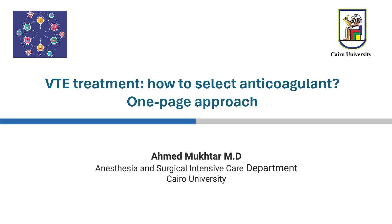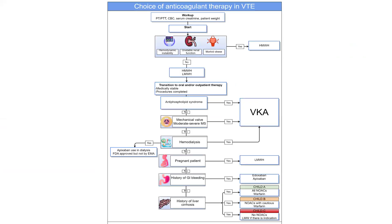In one page, we will discuss how to select anticoagulants in patients with venous thromboembolism. Looking at this page, we start first by examining some characteristics of the patient. We need to have some idea about the patient's weight, serum creatinine, CBC, and coagulation profile. Then we look at three important factors.